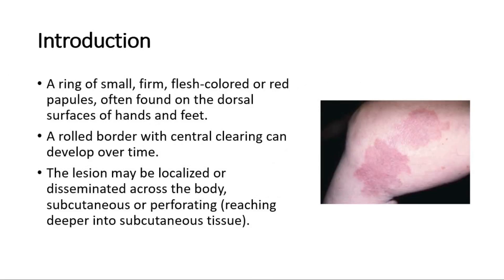It is described as a ring of small, firm, flesh-colored, or red papules, often found on the dorsal surfaces of hands and feet. A rolled border with central clearing can develop over time.